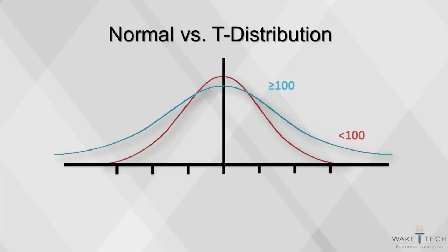The t-distribution is very similar to the standard normal distribution. It also has a bell curve, but the standard deviations are computed from the sample data instead of the population.